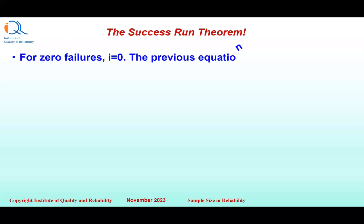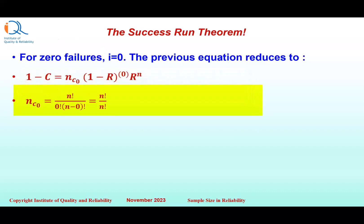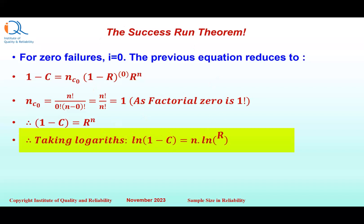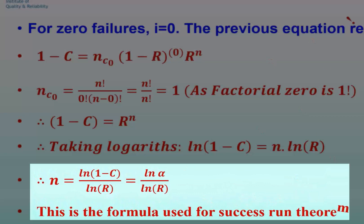For zero failures, I equals 0, and therefore the previous equation reduces to 1 minus C equals NC0 times 1 minus R raised to the power 0 times R raised to N. But NC0 equals 1 because factorial 0 is 1. Therefore 1 minus C equals R raised to N. Taking logarithms, we write ln(1 minus C) equals N times ln R. Therefore, sample size N equals ln(1 minus C) divided by ln R, or equivalently ln(alpha) divided by ln R, where alpha is the producer's risk which equals 1 minus confidence level C. This is the formula used for the Success Run Theorem.